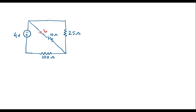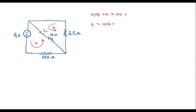I will calculate I2 using loop analysis. Here we have two loops. I will assume the current through this loop is X and the current through this loop is Y. Applying KVL to loop X, I can write: 4 equals 100X plus the voltage across the 10 ohm resistor, which is 10 times (X minus Y), because X and Y are opposite to each other. That gives: 4 equals 110X minus 10Y.